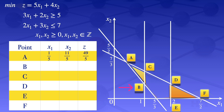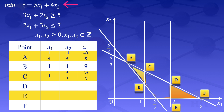At point C, x1 equals 1 and we find the intersection with the second constraint: x2 equals (7 minus 2) divided by 3 equals 5 over 3. Substituting into the objective function gives z equals 35 over 3. At point D, x1 equals 2 and intersecting with the second constraint: x2 equals (7 minus 4) divided by 3 equals 1. Substituting gives z equals 14.